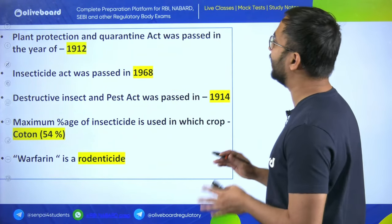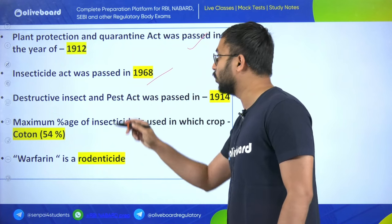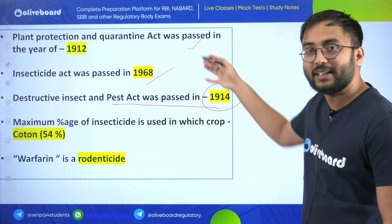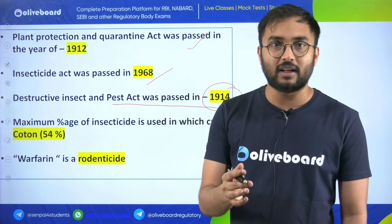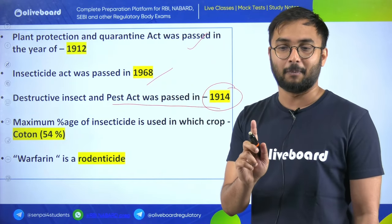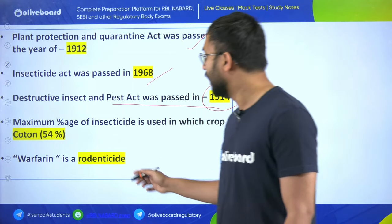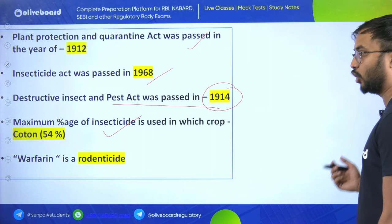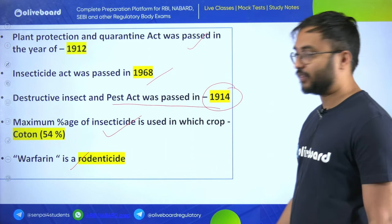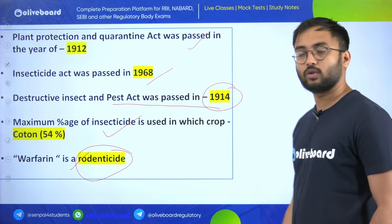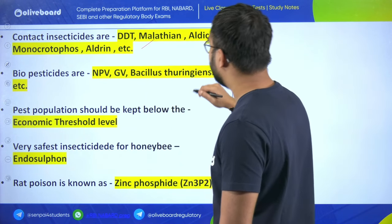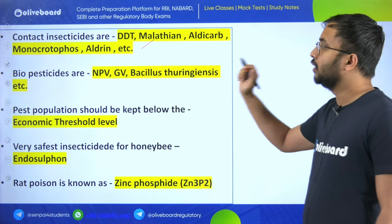Plant Protection and Quarantine Act was passed in 1912. Insecticide Act was passed in 1968. Destructive Insect and Pest Act was passed in 1914. In Chhattisgarh REO exam, one to two act-related questions definitely come. Maximum use of insecticide is in cotton - 50 percent. Warfarin is a rodenticide. Contact insecticides are DDT, Malathion, Aldicarb, Monocrotophos, and Aldrin.